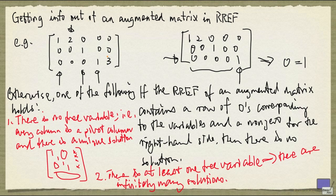So that basically sums up how you can read off solutions from the reduced row echelon form of an augmented matrix.